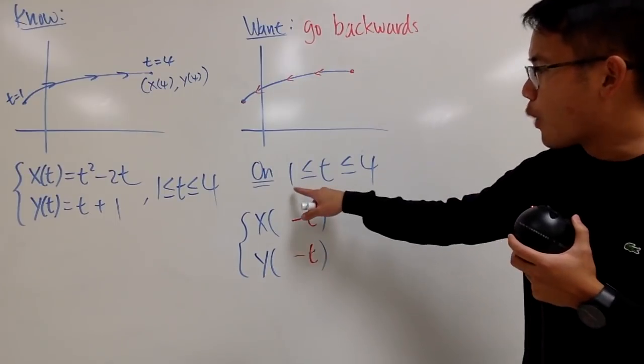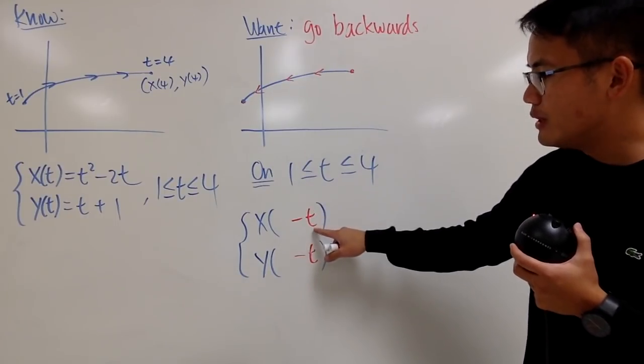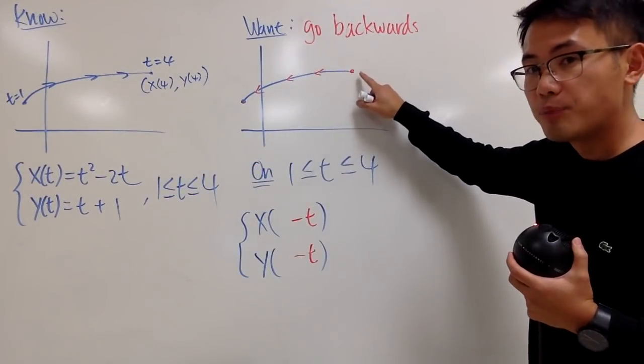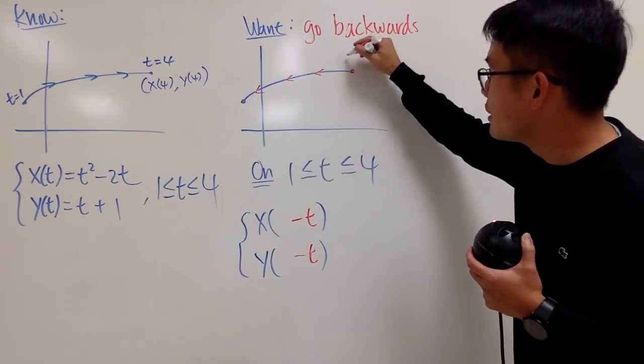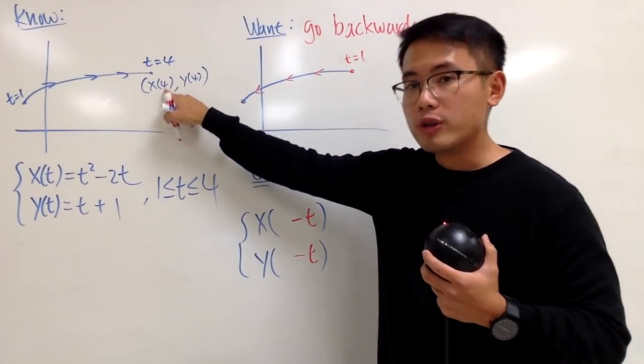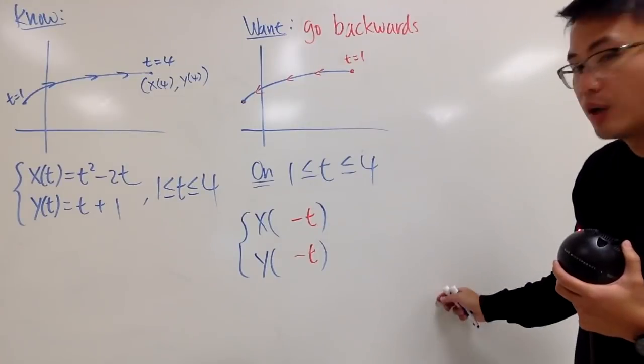The idea is that when I plug in 1 into this right here, I want to end up with 4. Because this is my starting point now, I want when t is 1 right here, I want to have the old position here. So how can we make that happen?